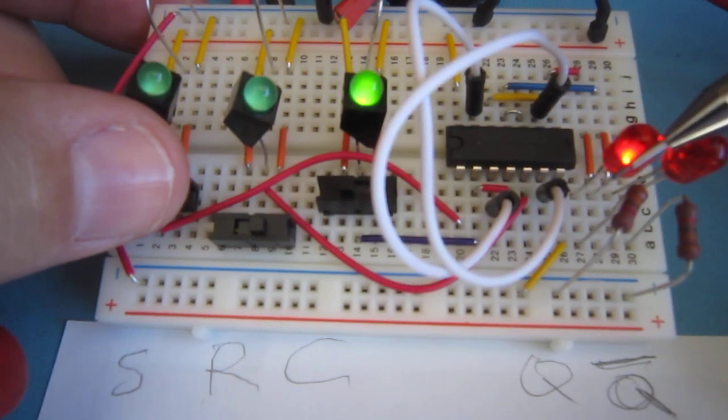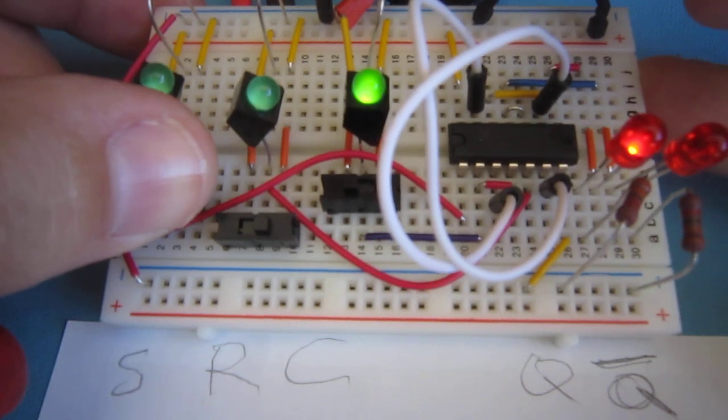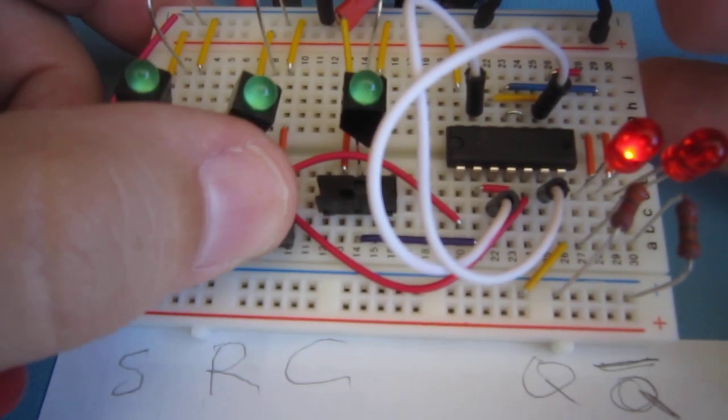Now we can turn it off. The bit is still stored in the one state and it will stay that way. We can turn it on and off a bunch of times. It doesn't matter until we reset.